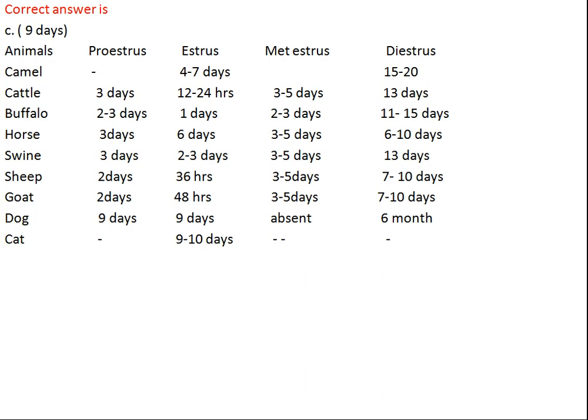Estrus duration: camel 4–7 days, cattle 12–24 hours, buffalo 1 day, horse 6 days, swine 2–3 days, sheep 36 hours, goat 48 hours, dog 9 days. Metestrus is absent in dog, camel, and cat. Diestrus period: cattle and swine 13 days, buffalo 11–15 days, horse 6–10 days, sheep and goat 7–10 days, dog 6 months — which is very long.